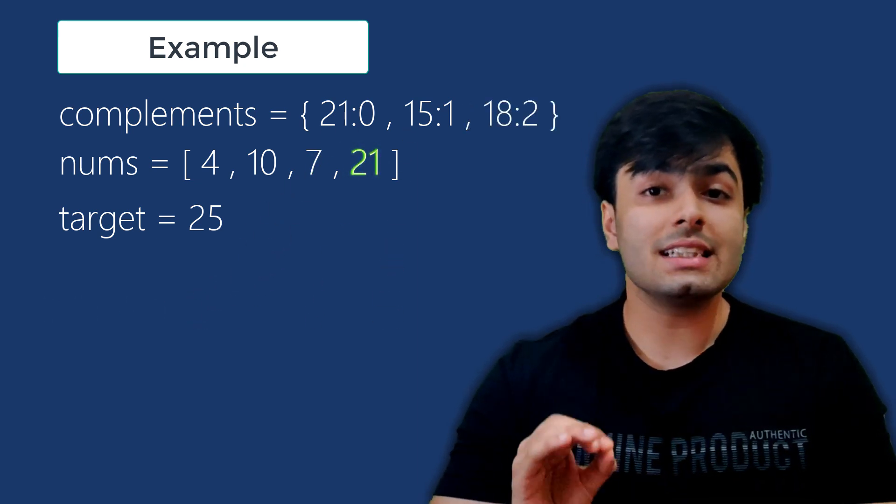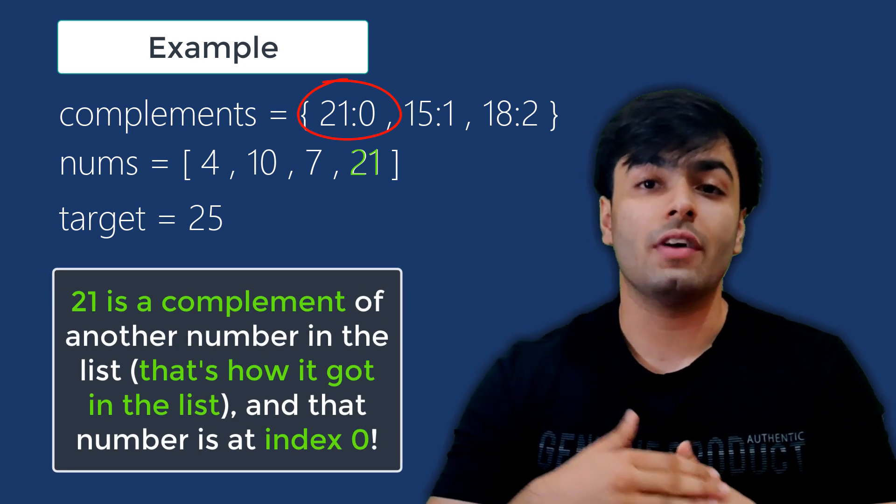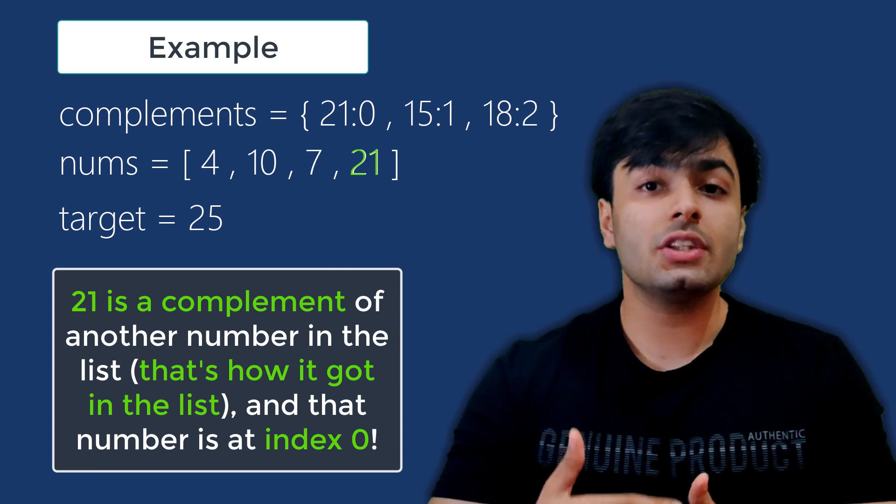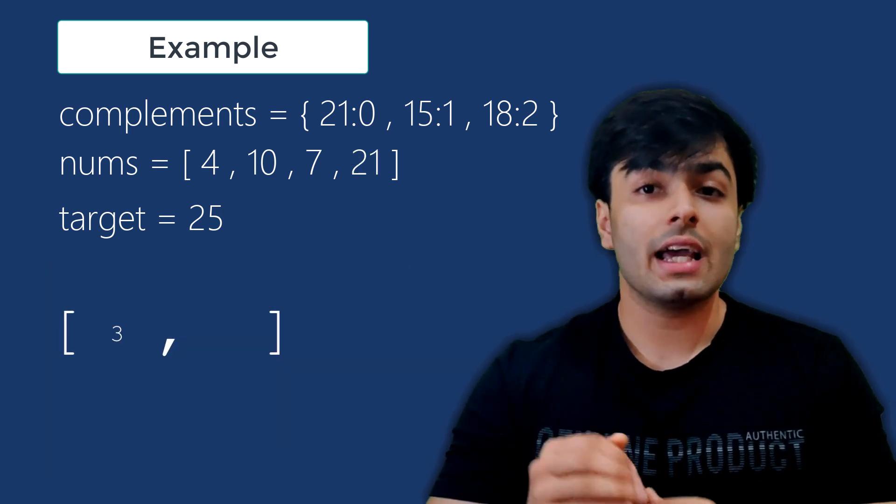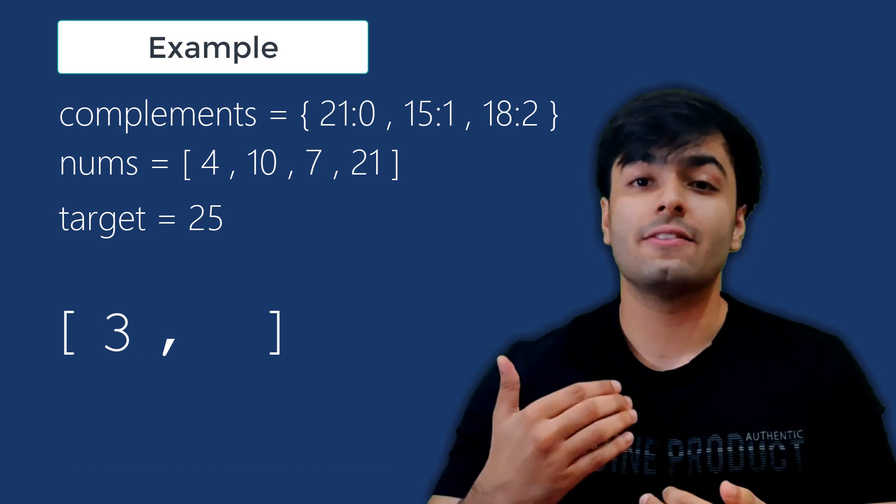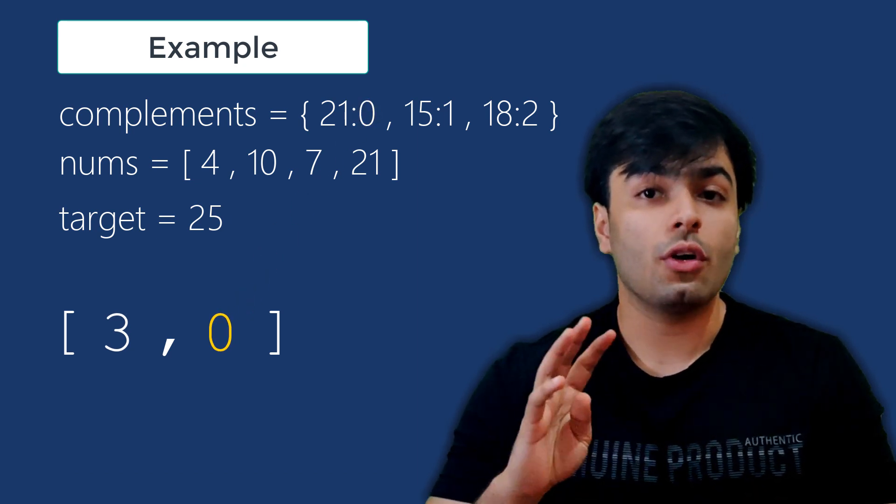Finally, we go to 21. We can see that 21 is one of the keys in our dictionary, and this means that we have now found a complementary pair, and we need to return the indices. We know that the index number of 21 is 3, and from our dictionary, we can see that the value corresponding to 21 is 0, which is the index number of 4.